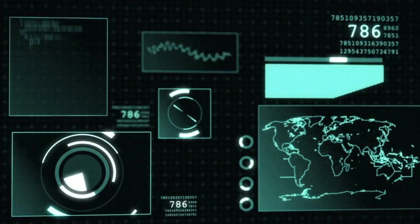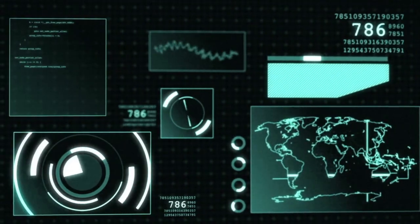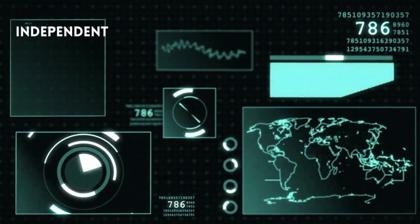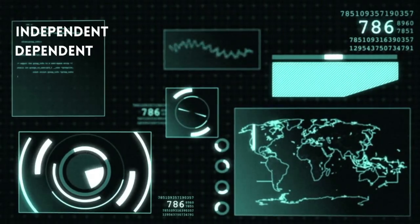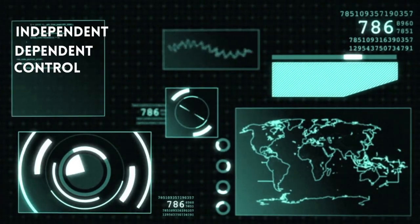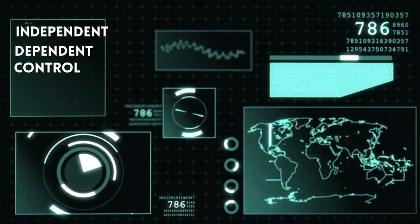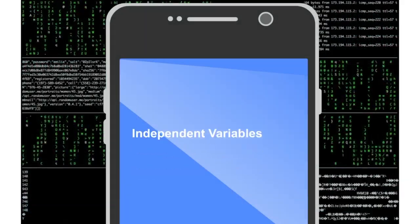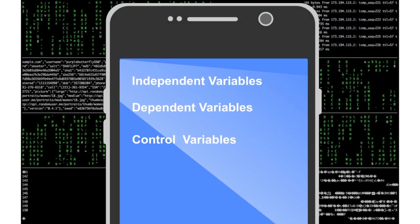In most experiments you will find at least three variables: the independent variable, the dependent variable, and the control or constant variables. Let's take a look at walking water and see if we can learn about these three types of variables.